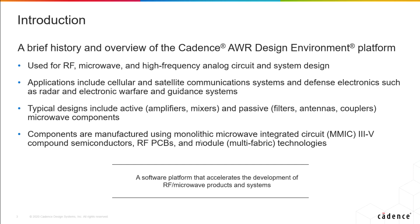The applications are listed here: cellular, satellite, radar, electronic warfare. We do active devices like amplifiers and mixers, and then of course passive devices such as filters, antennas, etc. In terms of the medium used, it would be semiconductors — most typically MMIC III-V semiconductors such as gallium arsenide and gallium nitride — RFPCBs, modules, and so on.